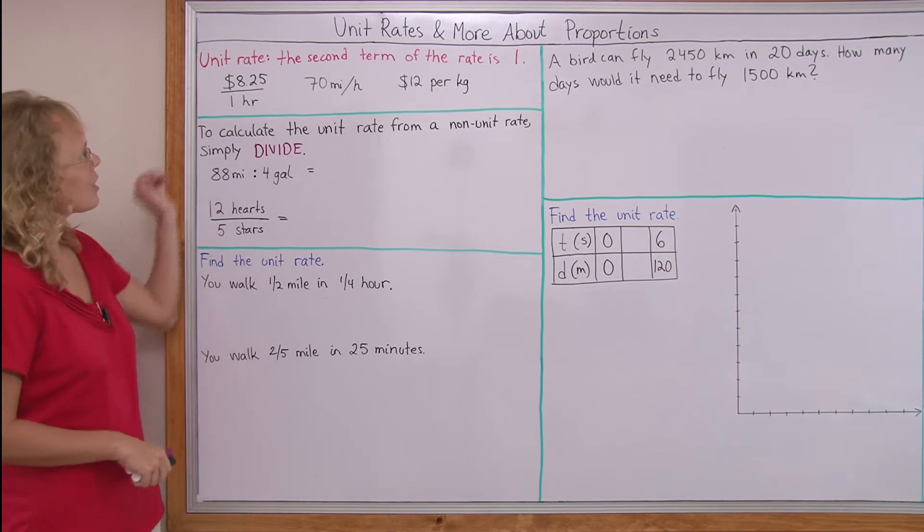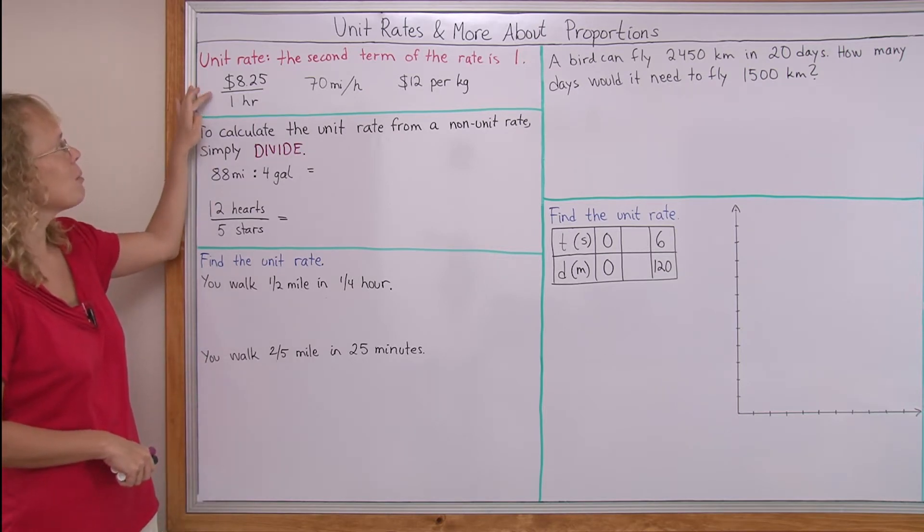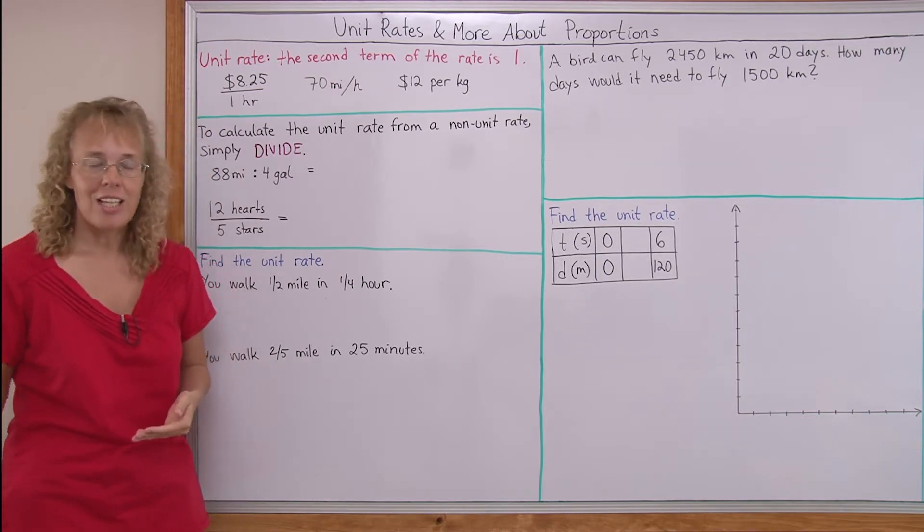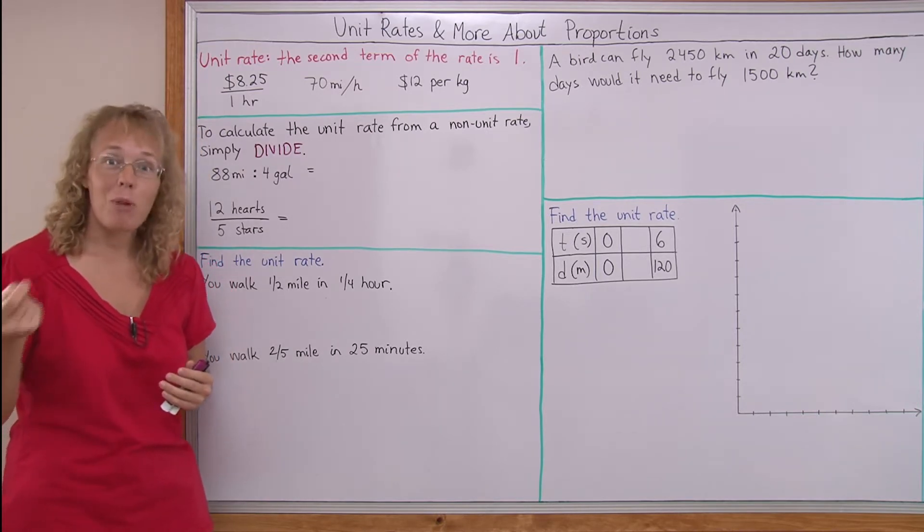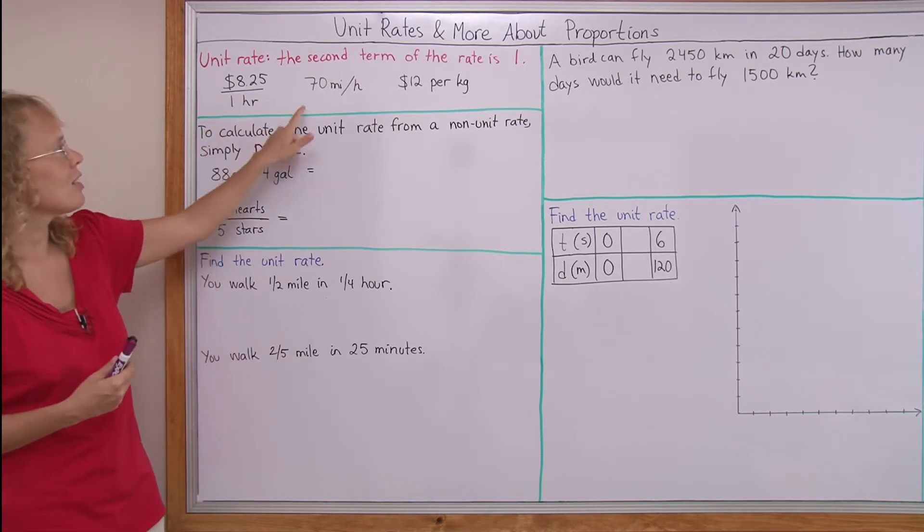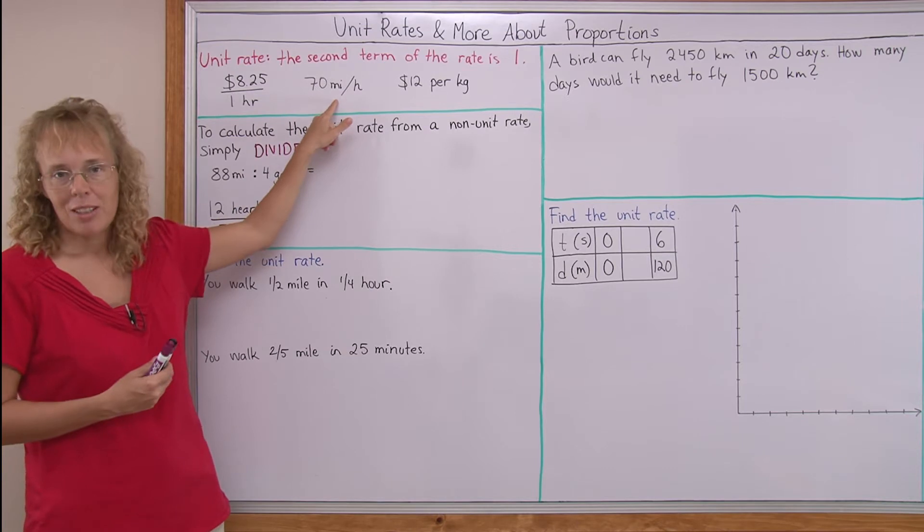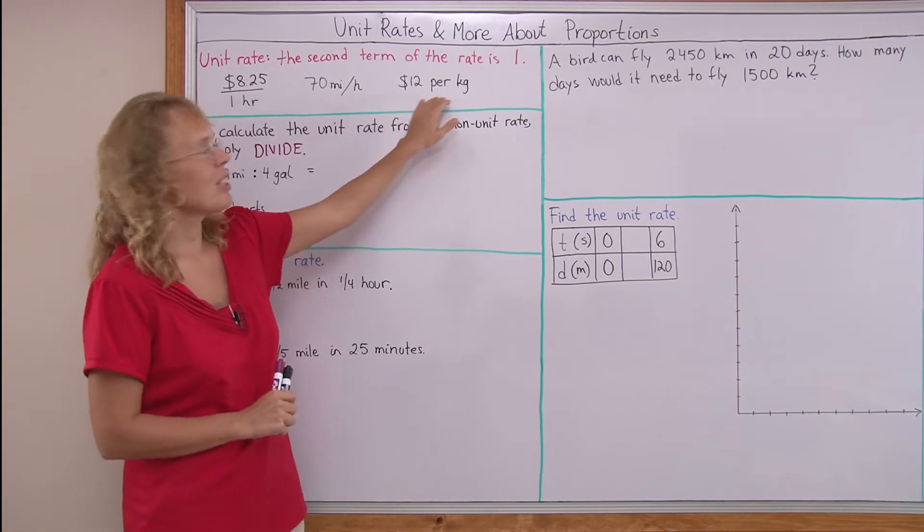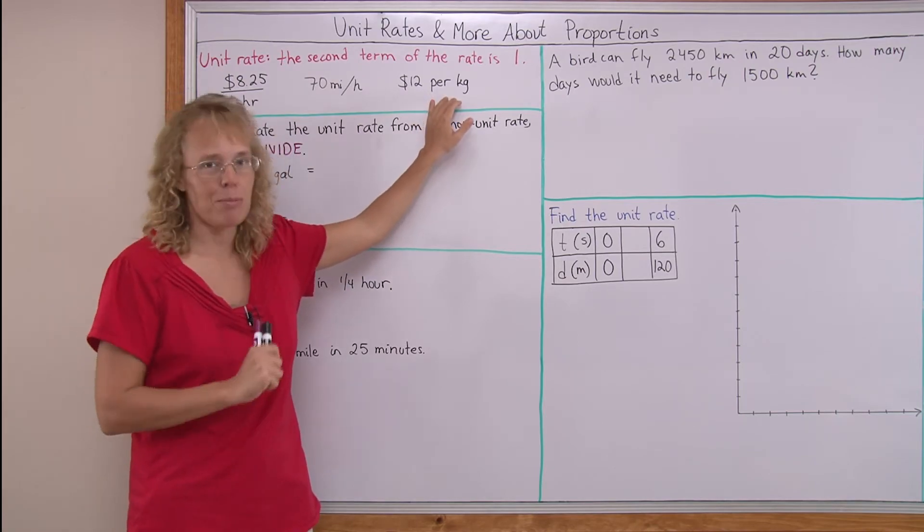Here's some examples, for example $8.25 per one hour. Or we might say it's just $8.25 per hour, but we mean per one hour. This one hour makes it the unit rate. Another 70 miles per hour, but it means per one hour, so it is a unit rate. Or $12 per kilogram, per one kilogram it means.